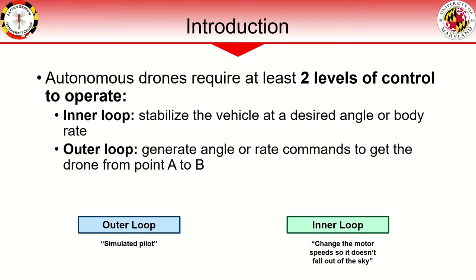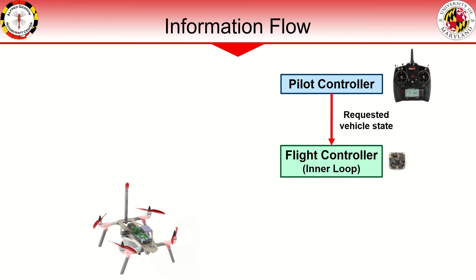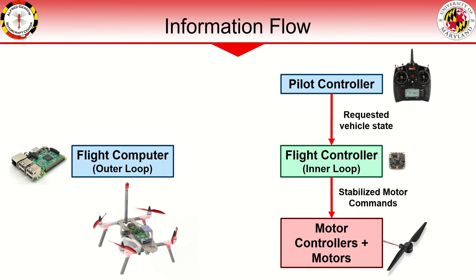The outer loop controller can be thought of as a simulated pilot that generates pilot commands in response to various sensor data, used to figure out where the drone is in space to get it from point A to B without crashing. We call the board that handles inner loop control the flight controller — this is the heart of the drone that allows a pilot to talk to it with a requested vehicle state and outputs stabilized commands to the motors to achieve that state. A flight computer is what conducts all outer loop control and requests a vehicle state from the flight controller, just like a pilot does.